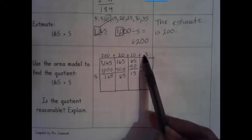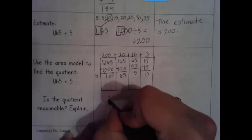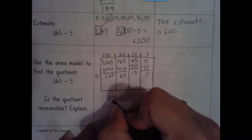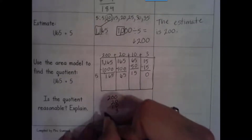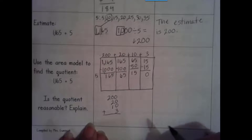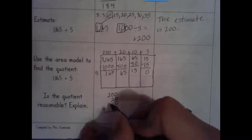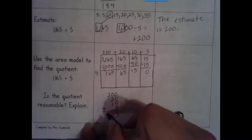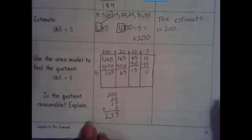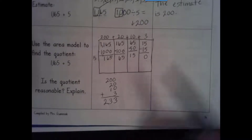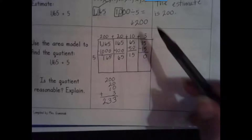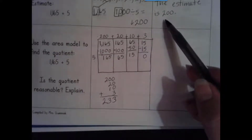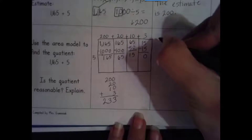All we have to do is add up our partial quotients: 200 plus 20 plus 10 plus 3 equals 233. Is 233 close to 200? Yes, it is reasonable. I knew 200 would be low, so the answer is above it but close, so it is reasonable.